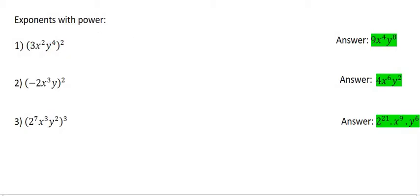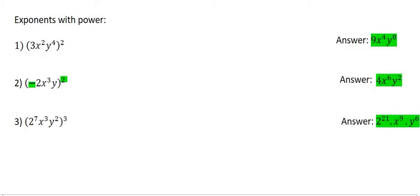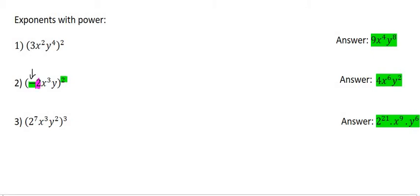Moving on to number 2. Here we have a minus to the power of 2. What 'to the power of 2' actually means is that you're going to multiply that thing together twice. So a minus times a minus — that's just going to be a positive, so we're going to have a positive answer. Then this 2 over here currently has an exponent of 1, and the exponent rule says that we should times these two together, giving us 2 to the power of 2. Then this x³ is going to multiply with that 2, giving x to the power of 6. And this y currently has an exponent of 1, so you multiply 1 and 2 together, giving y to the power of 2.